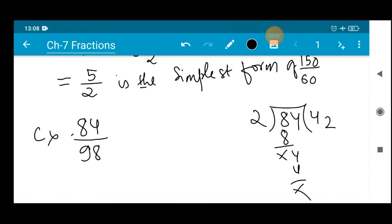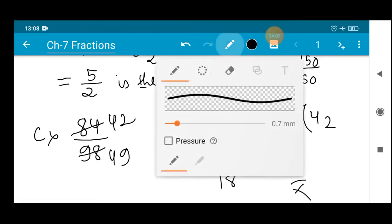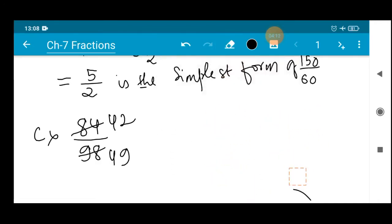So 84 we have to divide by 2. 2 fours are 8, 2 twos 4. So 2 forty-twos is 84. Similarly, let's divide 98 with the same number 2. 2 fours are 8, 1, 2, 9, 18. So 2 forty-nines is 98. Let me remove this, you can do this part in your rough work.